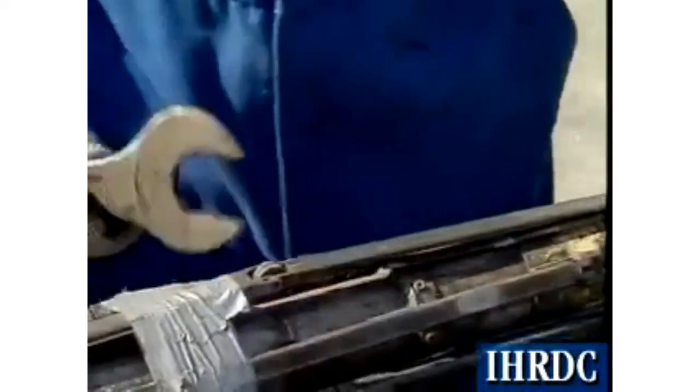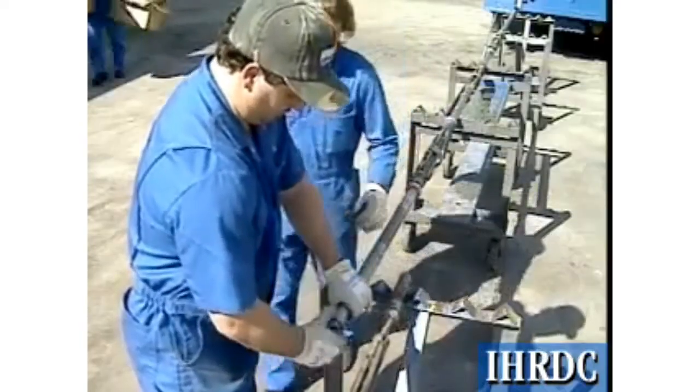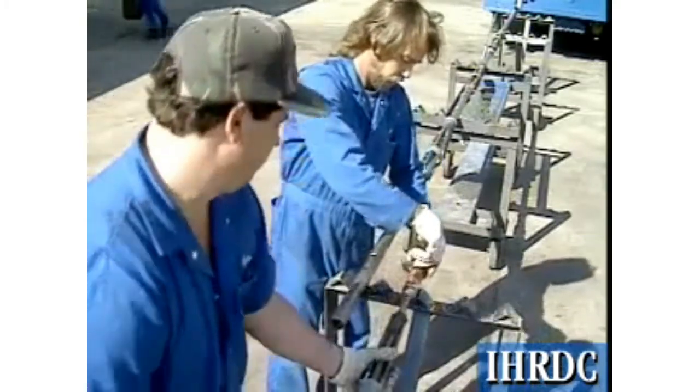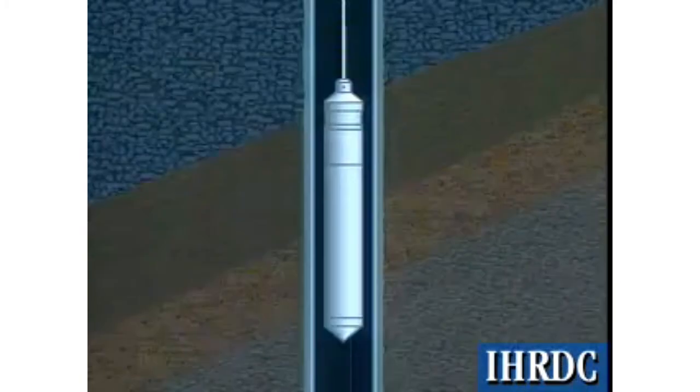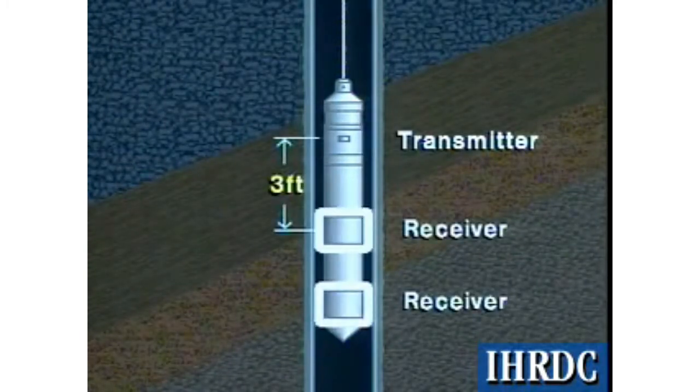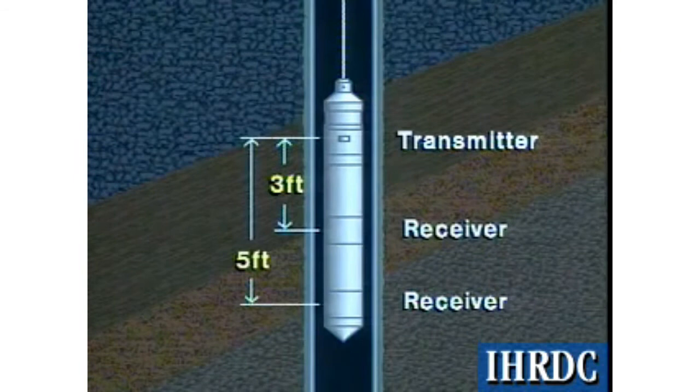The cement bond log, or CBL, is an acoustic device used to detect the presence or absence of a cement bond between the casing and formation. The tool includes an acoustic transmitter and usually two receivers located 3 feet and 5 feet, 0.91 and 1.52 meters, from the transmitter.